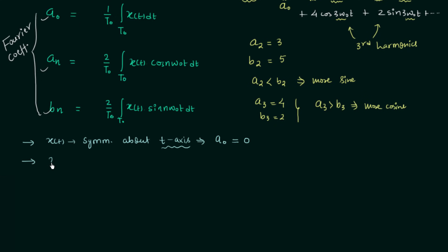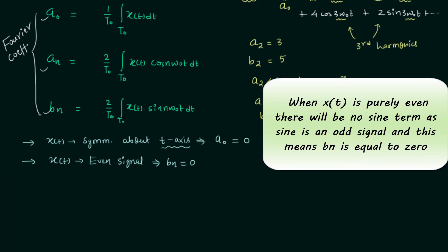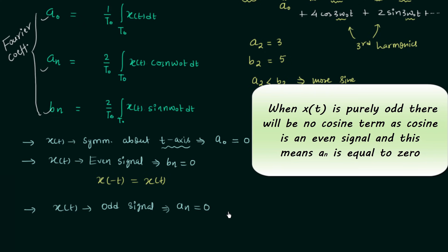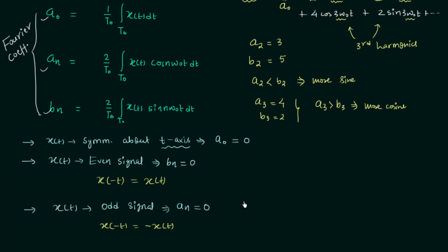Whenever the given periodic signal is an even signal — meaning after time reversal we get the same signal — we can directly say that b_n = 0. And whenever the given signal is an odd signal — meaning after time reversal we get negative of x(t) — then a_n = 0 and there is no need to calculate it. These three points are very important while performing calculations because they will save time.